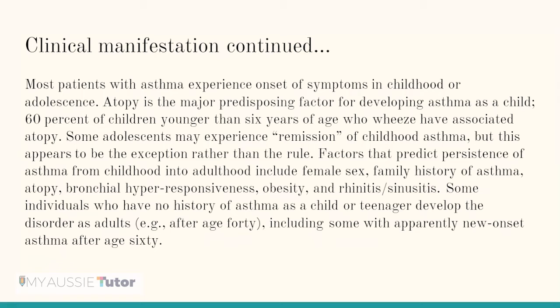Most patients with asthma experience onset of symptoms in childhood or adolescence. Atopy is the major predisposing factor for developing asthma as a child; 60% of children younger than 6 years who wheeze have associated atopy. Some adolescents may experience remission of childhood asthma but this appears to be the exception rather than the rule. Factors that predict persistence of asthma from childhood into adulthood include female sex, family history of asthma, atopy, bronchial hyperresponsiveness, obesity, and rhinitis or sinusitis. Some individuals with no history of childhood asthma may develop the disorder as adults, including some with apparently new-onset asthma after age 60.